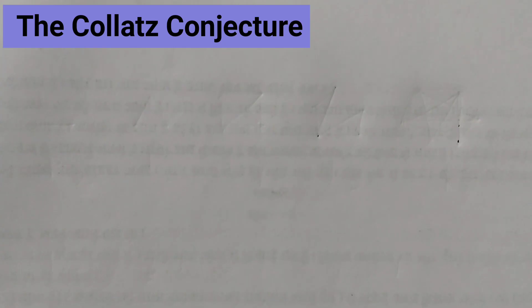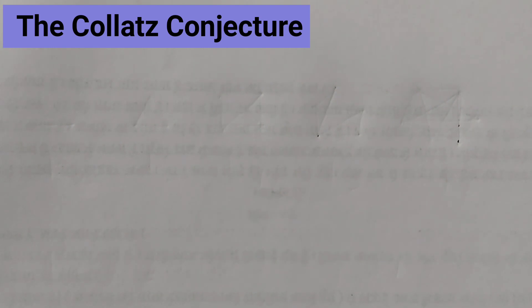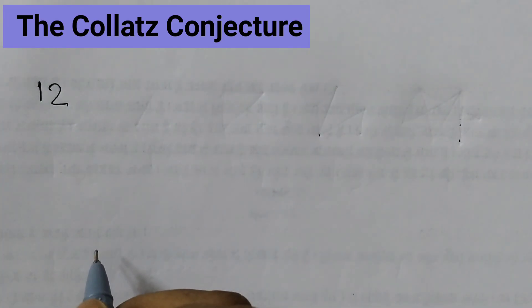There are two rules that we need to follow. If the number is even, we need to take half of it. If the number is odd, multiply it by 3 and then add 1 and go on repeating this process till you get 1. Let us understand this with some examples. Let us say we start with 12.